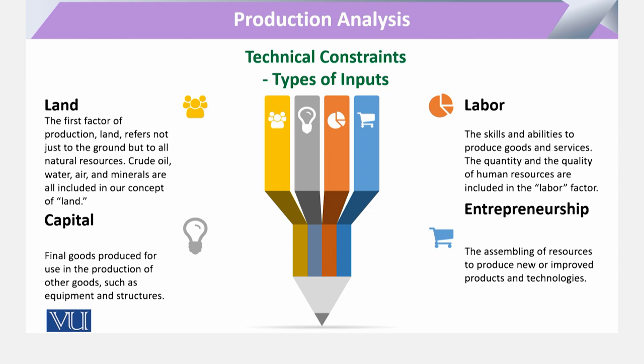Now, coming to all of this, we can see that these inputs, on one hand, give us the total level of opportunity. On the other side, these four inputs are basically technical constraints that a firm has to consider — with these given resources, how much level of output that firm can produce.